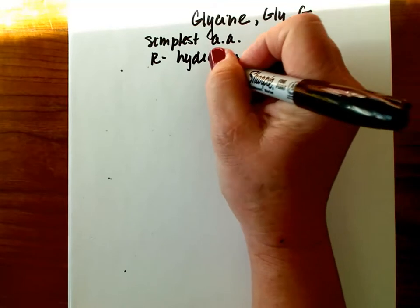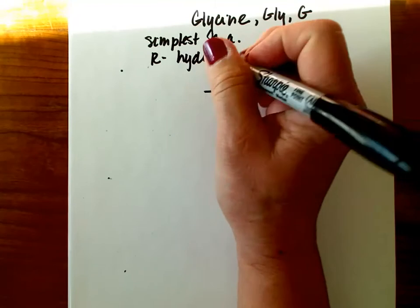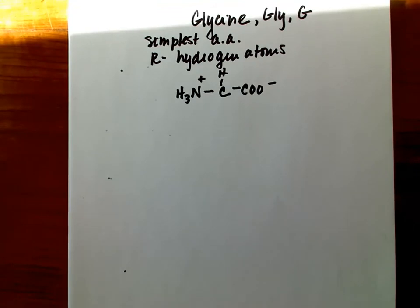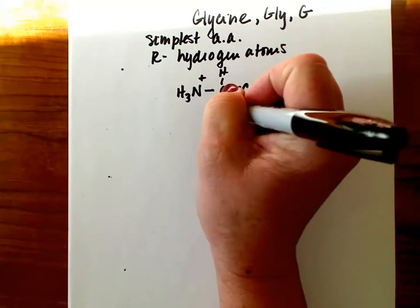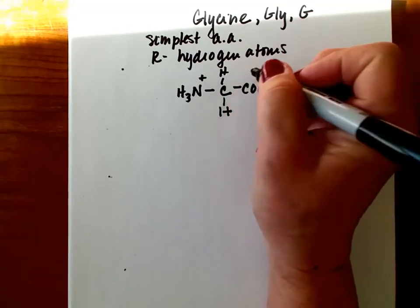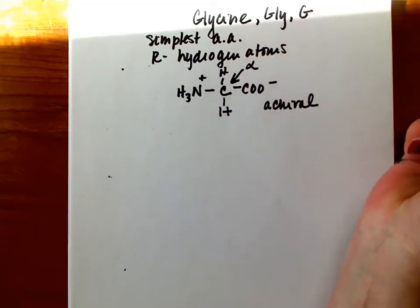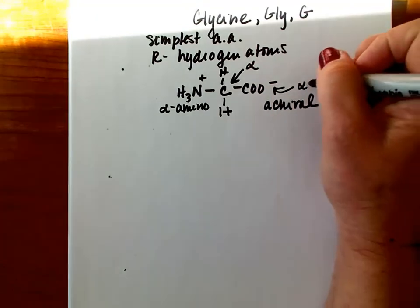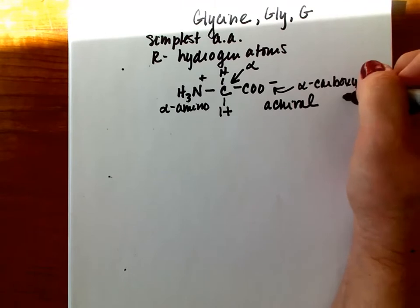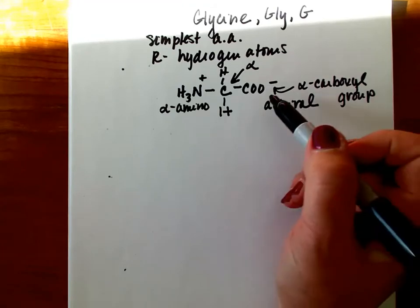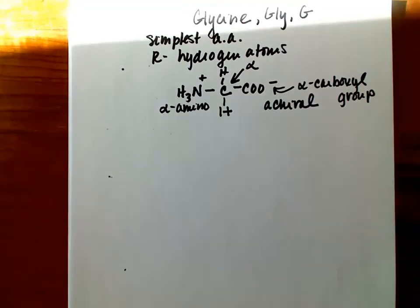If you need to refresh your memory, chiral molecules have carbons that are bonded to four different groups. The other standard amino acids are all chiral molecules, whereas glycine is not. Therefore, it is not optically active and it is achiral. Pointing out the fact that this is the alpha carbon, this is the alpha amino group, and this is the alpha carboxyl group. I'm going to draw these amino acids as they appear at physiological pH, so that's about 7.4. At that pH, the alpha carboxyl group is deprotonated, while the amino group is still protonated.